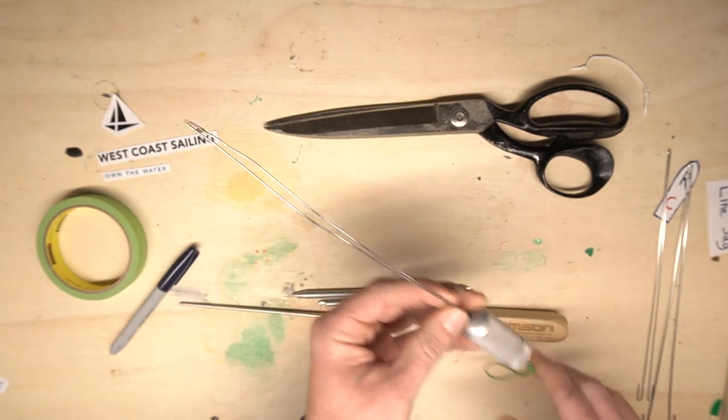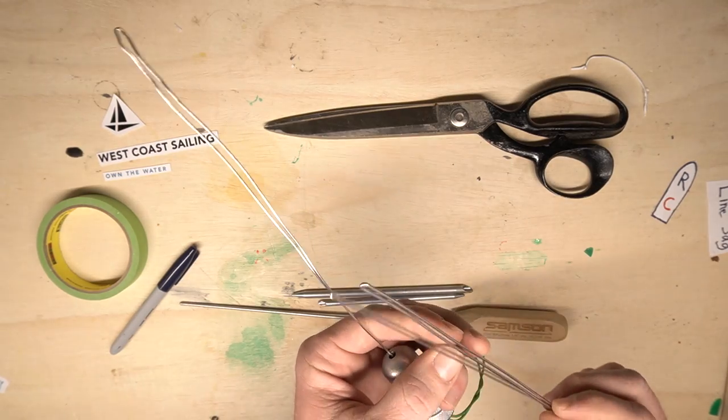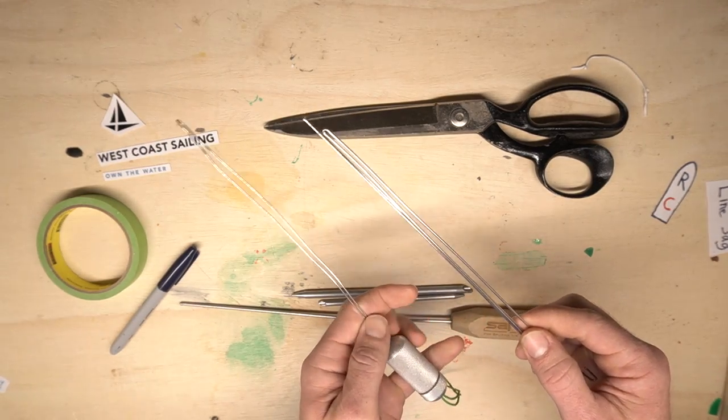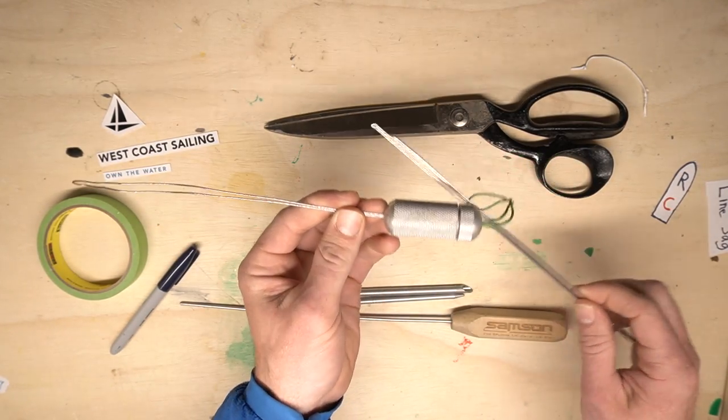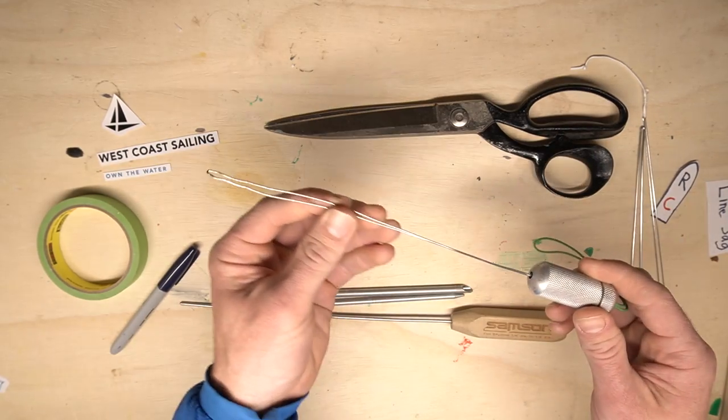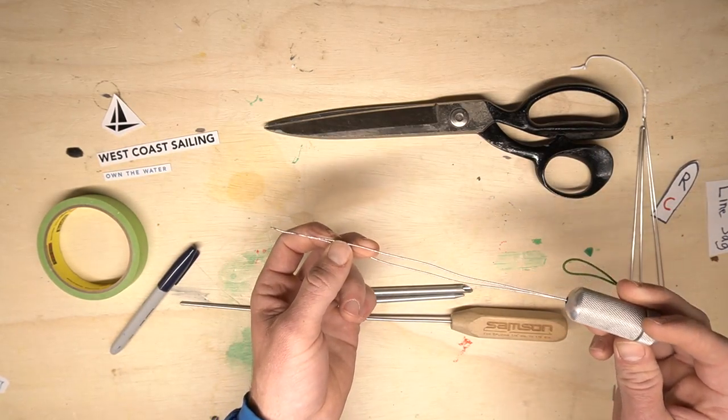They come with different tips that are really easy to change on this particular model, the de-splicer. So a really neat piece of kit to have, especially if you're working with small size ropes.